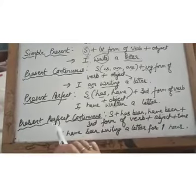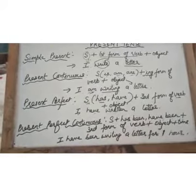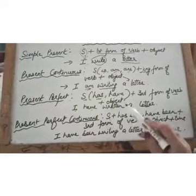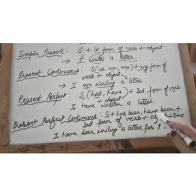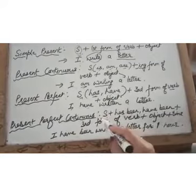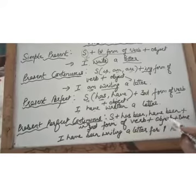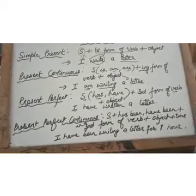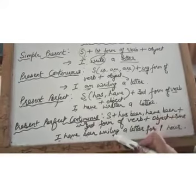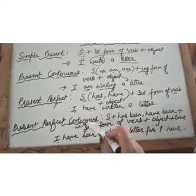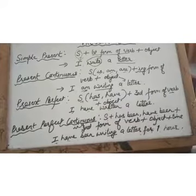Present perfect continuous: the structure is subject plus has been / have been plus ing form of verb plus object plus duration of time. For singular we use 'has been,' for plural 'have been.' For example: 'I have been writing a letter for one hour' — meaning you started writing and still have not completed it. The duration of time, like 'for one hour' or 'since three o'clock,' is essential in this tense.